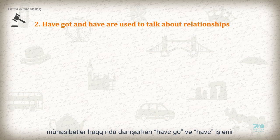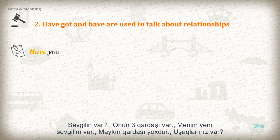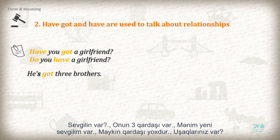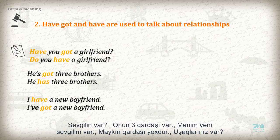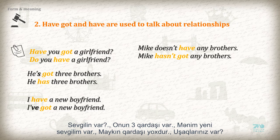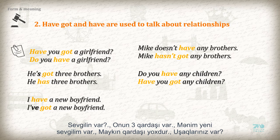Two: Have got and have are used to talk about relationships. Have you got a girlfriend? Do you have a girlfriend? He has got three brothers. He has three brothers. I have a new boyfriend. I have got a new boyfriend. Mike doesn't have any brothers. Mike hasn't got any brothers. Do you have any children? Have you got any children?